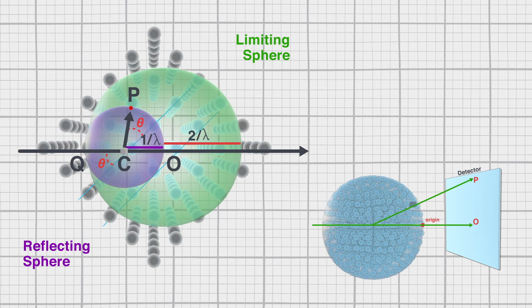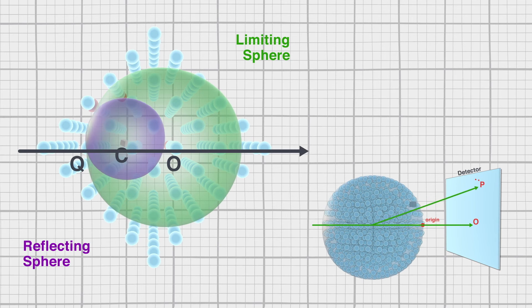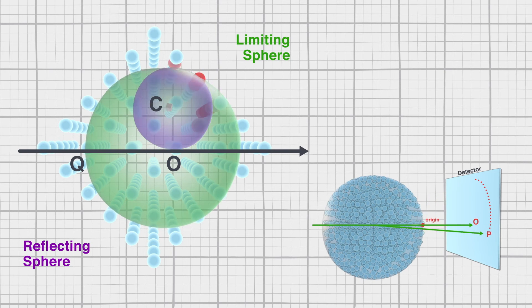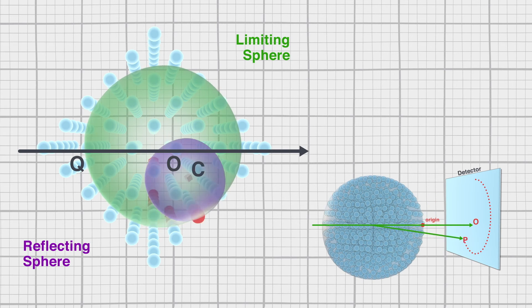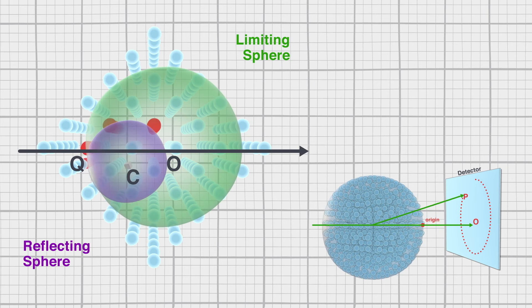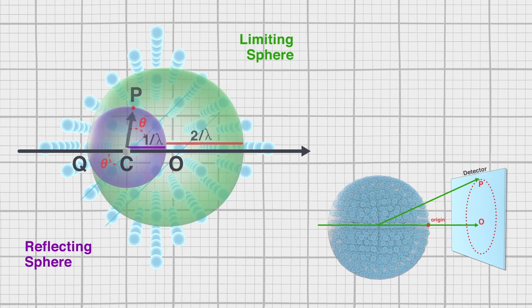Let's try that again. Now watch what happens to the diffraction spots as we rotate the reflecting or Ewald sphere within the limiting sphere. Now let's see how we might access more reflections.